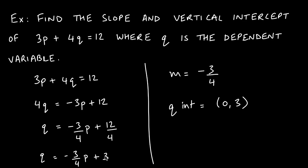Now the equation is in slope-intercept form. The coefficient of the independent variable P is the slope, so the slope is negative 3/4. Since Q is the dependent variable, the Q-intercept is the point (0, 3). Always convert to slope-intercept form first before identifying slope or intercepts — never try to read them from standard form. Please feel free to reach out if you have any questions.